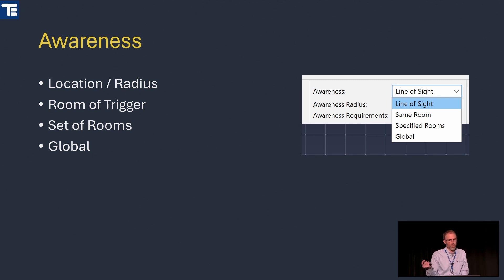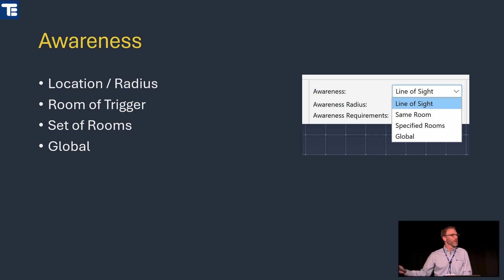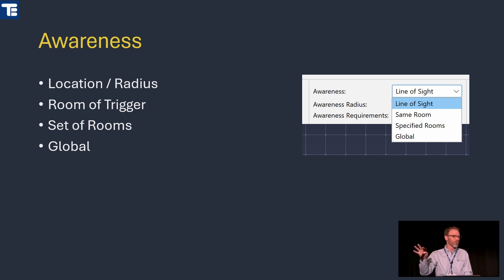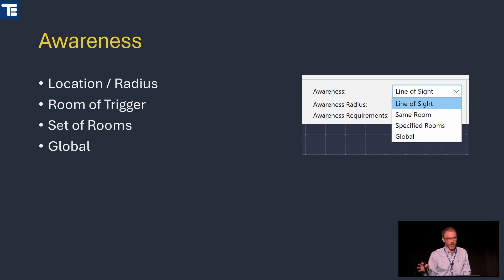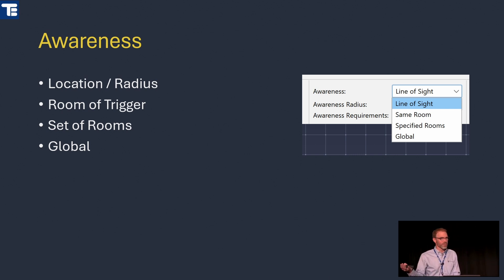When you define a trigger, the important parts are awareness, influence, susceptibility, and tags. Awareness types include: location with a radius, same room as the trigger, a set of rooms, or global. Global awareness is useful for time-based triggers — for example, when the fire alarm goes off, switch everyone from circulation behavior to exit behavior.